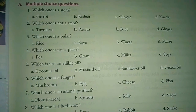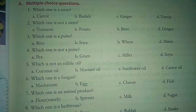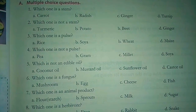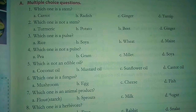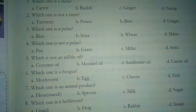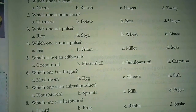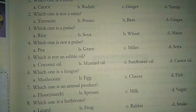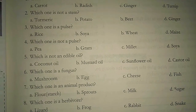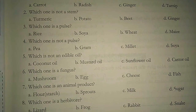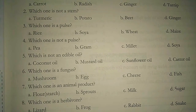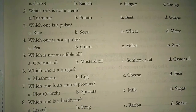Question number three: which one is a pulse? Options are rice, soya, wheat, and maize. Question number four: which one is not a pulse? Options are pea, gram, millet, and soya.